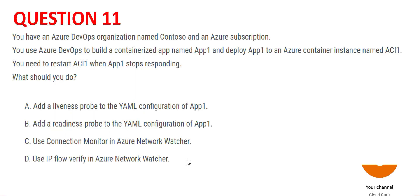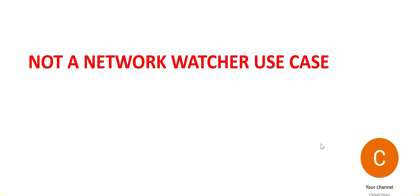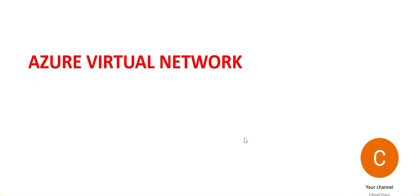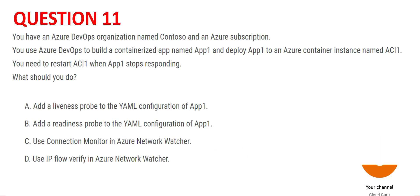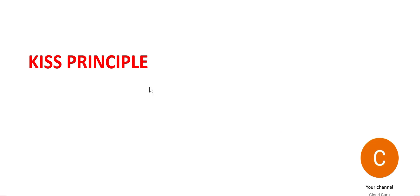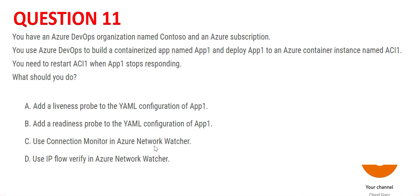The first two options are linked to YAML and the second two options are linked to Network Watcher. This is not a Network Watcher use case — you use Network Watcher when you have to monitor the Azure Virtual Network. Applying the KISS principle, we eliminate options C and D, so the answer has to be between A and B.